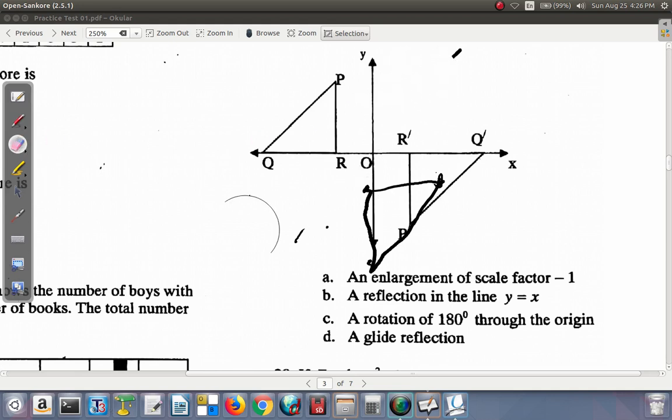Glide reflection would mean that it slides and goes somewhere and then it's reflected. So if PQR was to slide and say it ends up here, it would look like this. P would be up here, R down here. When it's reflected, P would end up here. That's what the glide reflection would look like. So that's not it.